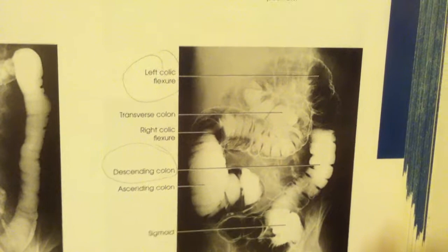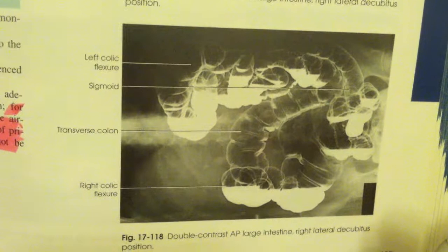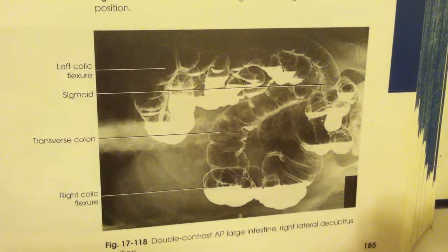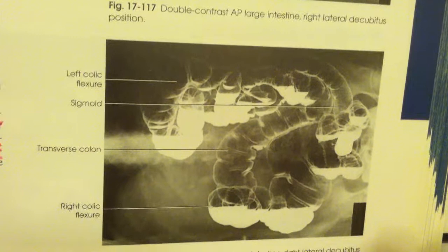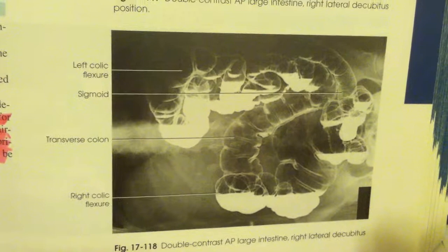The next image that I took was the right lateral decubitus, as shown right here. The right lateral decubitus best demonstrates the medial side of the ascending colon and the lateral side of the descending colon.